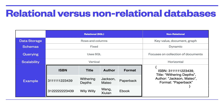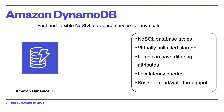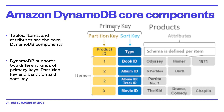A non-relational database is any database that does not follow the relational model provided by traditional relational database management systems. Non-relational databases have grown in popularity because they overcome the limitations of relational databases for handling variable-structured data. They scale out horizontally and can work with unstructured and semi-structured data. Amazon DynamoDB offers flexible, fast, highly scalable storage with virtually unlimited capacity, where items can have differing attributes and low-latency querying.